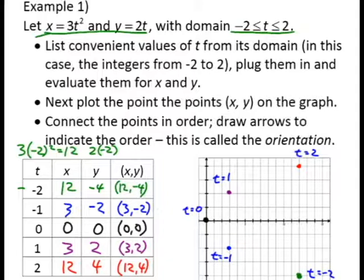This is a continuous path, and so we can trace this particle as it runs through values of t. Notice I do not extend past t equals 2 or t equals negative 2. Our domain prohibits that. We stop here. We stop here.